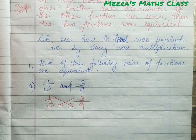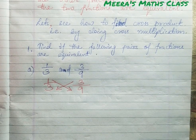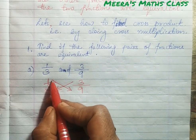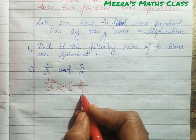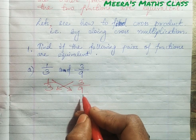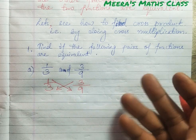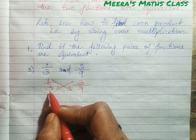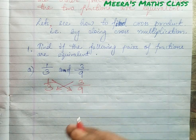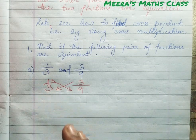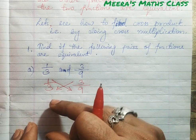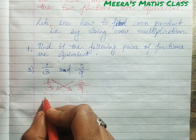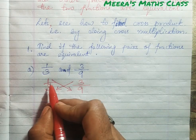Now you understand how to do cross multiplication. First you put a cross, then multiply this numerator by the denominator of the next fraction, and multiply the numerator of the other fraction by the denominator of the previous fraction. I will show you — writing it this way will make it very easy.